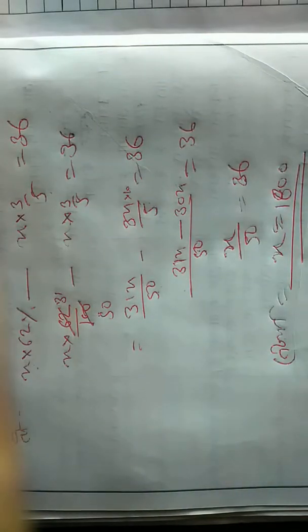हल करेंगे — 31x बटे 50 माइनस 3x बटे 5 बराबर 36 है। LCM पचास होगा। 31x माइनस 30x बटे 50 बराबर 36 है। तो x बराबर 36 गुणा 50 बटे 1 — यानी x बराबर 1800।